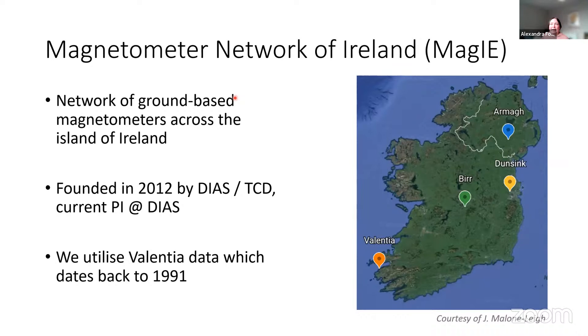So first I'm going to talk a bit about the Magnetometer Network of Ireland, or MAGI. So this is a network of ground-based magnetometers across the island of Ireland. So you can see them on this map here. So we have Armagh up in the north, Dunsink, which is at Dunsink Observatory in Dublin where we work, Burr in the Midlands, and Valencia down in the southwest.